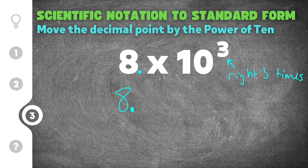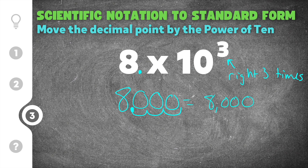10 to the third power means we take this decimal point and move it one, two, three times to the right. We add zeros for placeholders where digits are missing, and our final solution is 8 followed by three zeros — which is 8,000. So 8 times 10 to the third in scientific notation changes to 8,000.